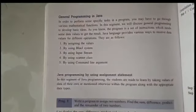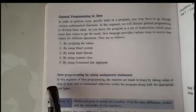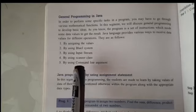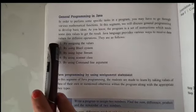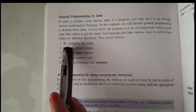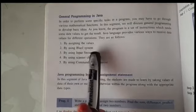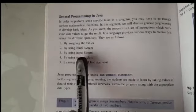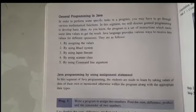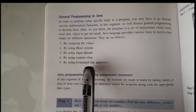Now it is easy to make connection with you all and it will help us to maintain the flow of study. General programming in Java. The program is a set of instructions which needs some data values to get the result. We give data in five forms: one by assigning the value, two by using BlueJ system, three by using input stream, four by using scanner class, and five by using command line argument.